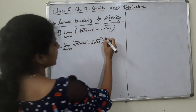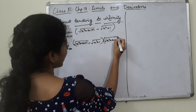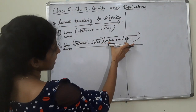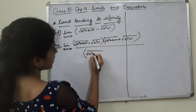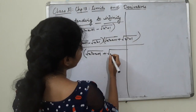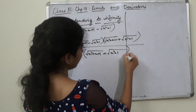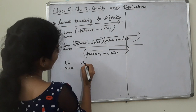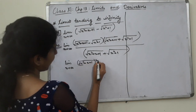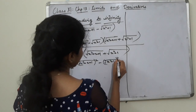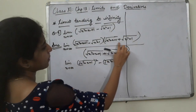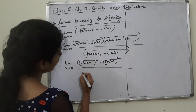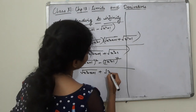This is a minus sign, so we have to conjugate it — we have to rationalize. We use a minus b times a plus b equals a squared minus b squared, dividing by root of x squared plus x plus 1 plus root of x squared plus 1.